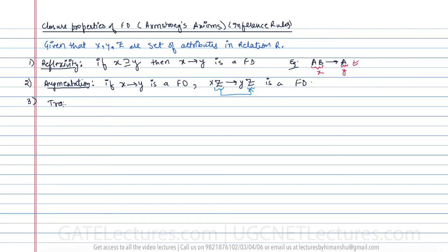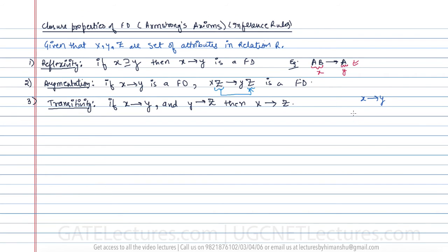The third property is called transitivity. If we have a functional dependency X determines Y, and Y determines Z, then X determines Z also holds. So if X determines Y and Y determines Z, therefore X determines Z — this kind of property is called transitivity.